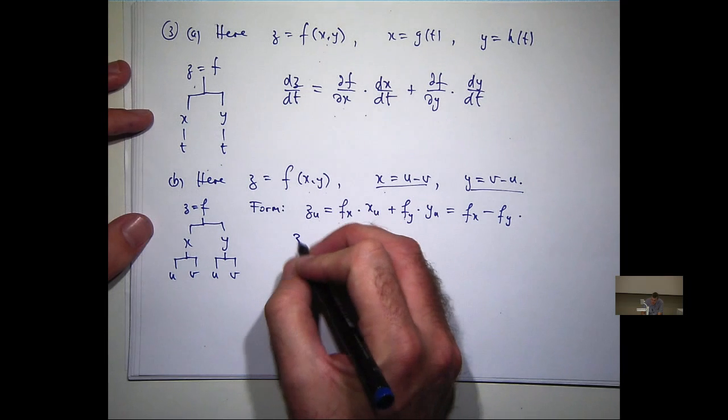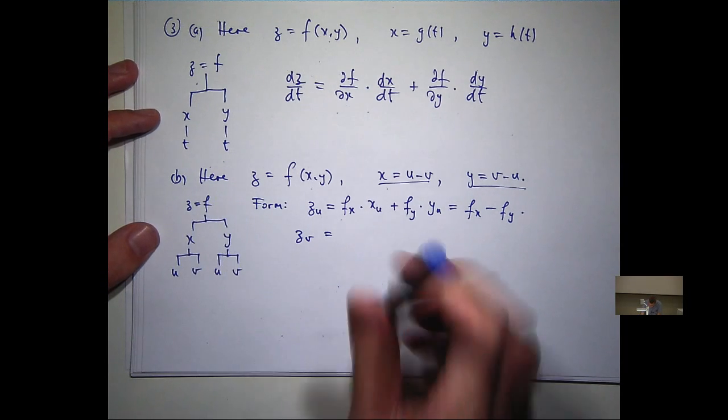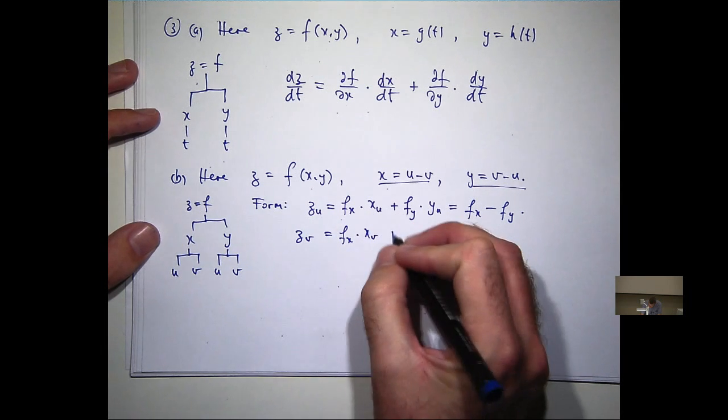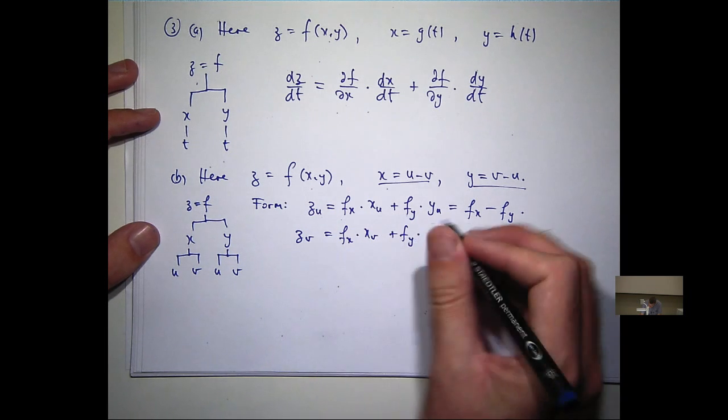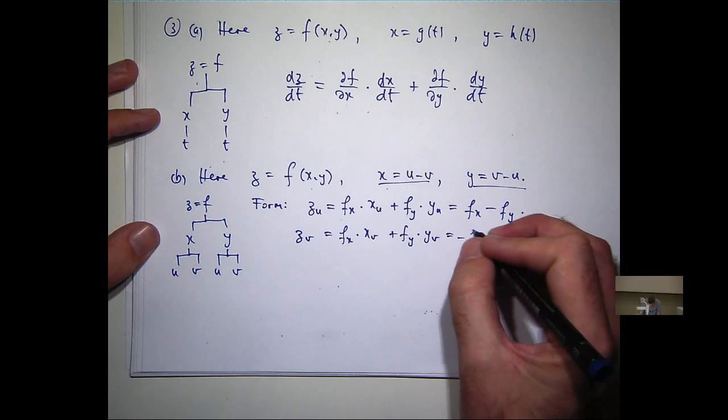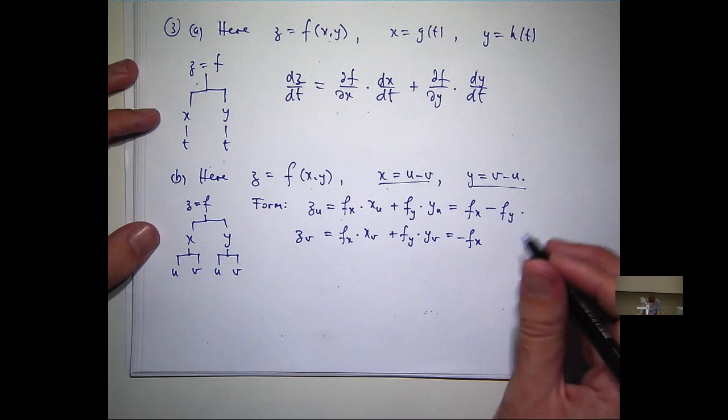What about z sub v, dz/dv? Well, just go through and find all the paths to a v. Okay, so again, x sub v is going to be minus 1, y sub v is going to be plus 1.